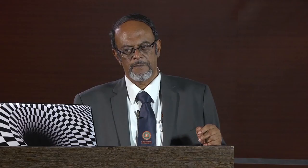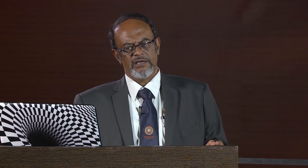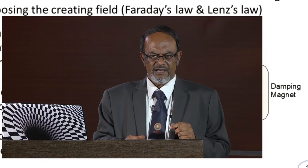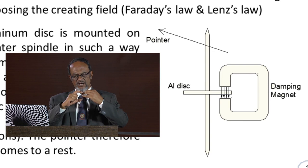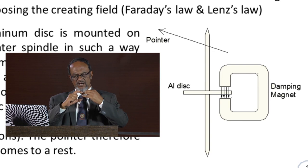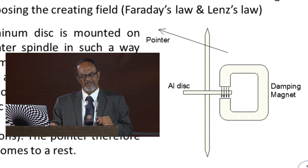But the most effective damping method is eddy current damping. Eddy current damping makes use of the principle that when a conductor moves in a magnetic field, an EMF is induced in it. This induced EMF creates an induced current, which in turn creates a magnetic field opposing the creating field — following from Faraday's law and Lenz's law. Typically, an aluminum disc is mounted on the spindle of the pointer, arranged so that the disc moves between the jaws of an open magnet. When the disc turns and oscillates, it cuts the magnetic flux, and the induced eddy currents oppose this movement, opposing the oscillations, so the pointer quickly comes to rest.